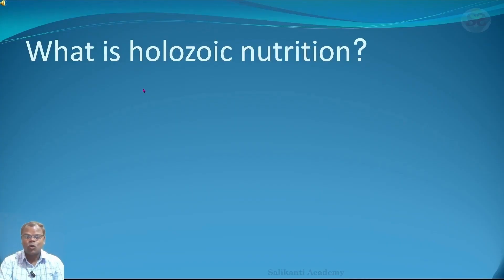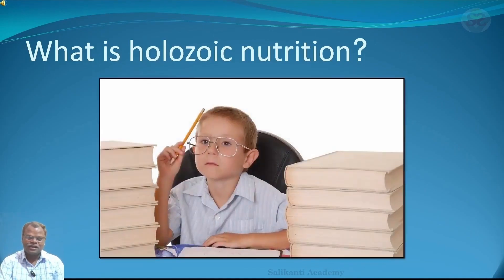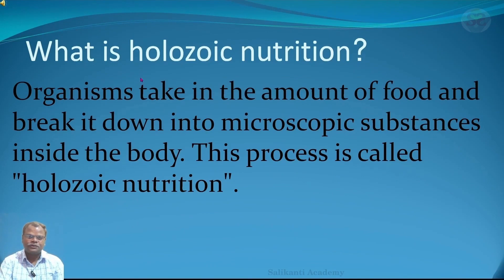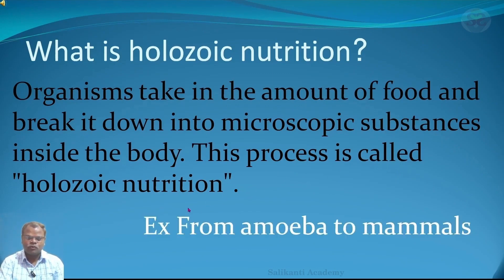What is holozoic nutrition? In holozoic nutrition, an organism takes in an amount of food and breaks it down into microscopic substances inside the body. This process is called holozoic nutrition. Examples of holozoic nutrition range from amoeba to mammals — amoeba is unicellular and mammals are multicellular, but both follow holozoic nutrition.